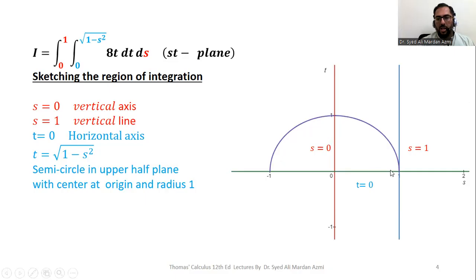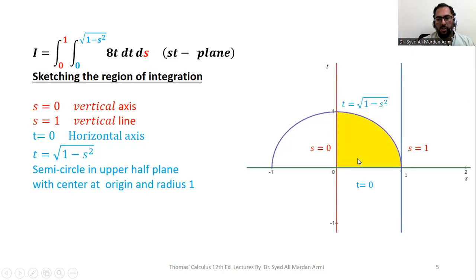And after this plotting, you see that our bounded region is in the first quadrant, this portion. In the next step, we highlight our region of integration. And this is the requirement of our question. We have plotted our required region of integration and we highlighted our required region of integration.